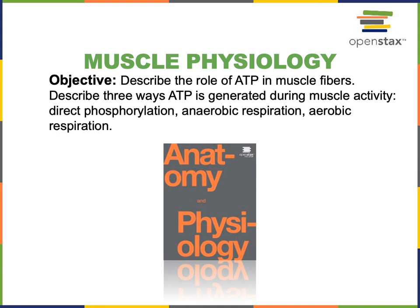This video will cover the following objectives from muscle physiology: describe the role of ATP in muscle fibers, and describe three ways ATP is generated during muscle activity. These are direct phosphorylation, anaerobic respiration, and aerobic respiration.